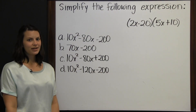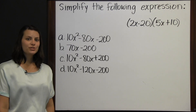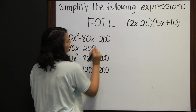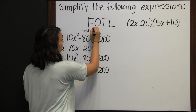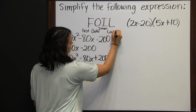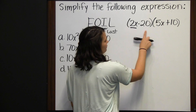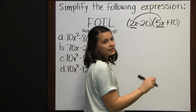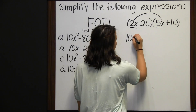Simplify the expression: the quantity 2x minus 20 times the quantity 5x plus 10. To multiply these two binomials, we use a method called FOIL. F stands for First — multiply the first term in the first binomial times the first term in the second binomial: 2x times 5x. 2 times 5 is 10, and x times x is x squared, giving us 10x squared.